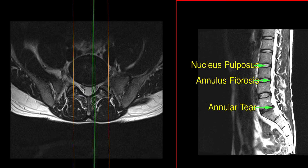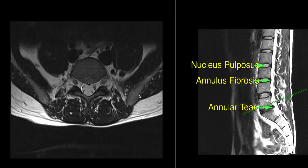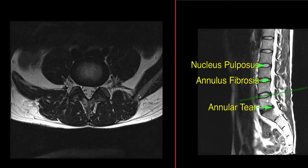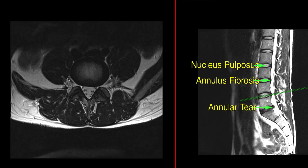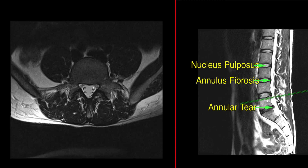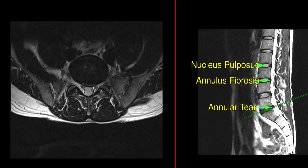If we click over here on this image on the right, we're going to scroll quickly up to the L4-5 level to look at a normal level. Here's the intervertebral disc, the spinal canal behind it, and we're going to scroll down now to the L5S1 level where this is the annular tear.